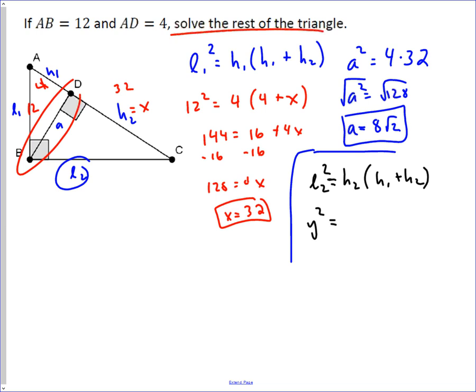H2 we found out is 32, H1 is just 4, and then plus 32. So that gives us Y squared equals 32 times 36.